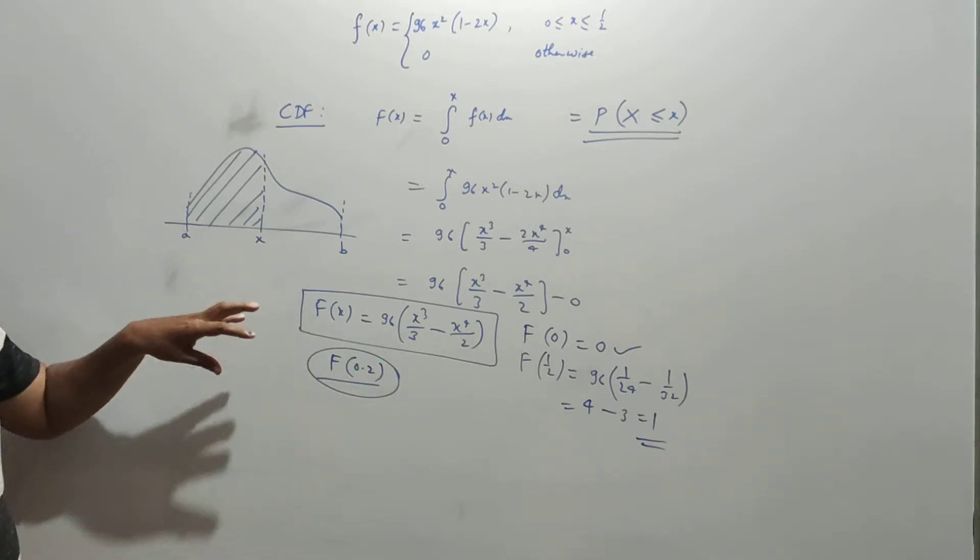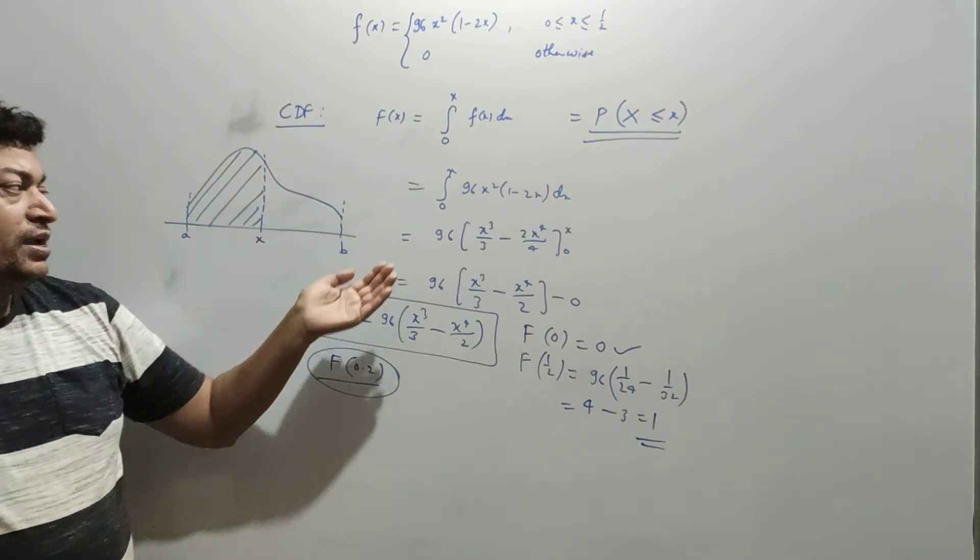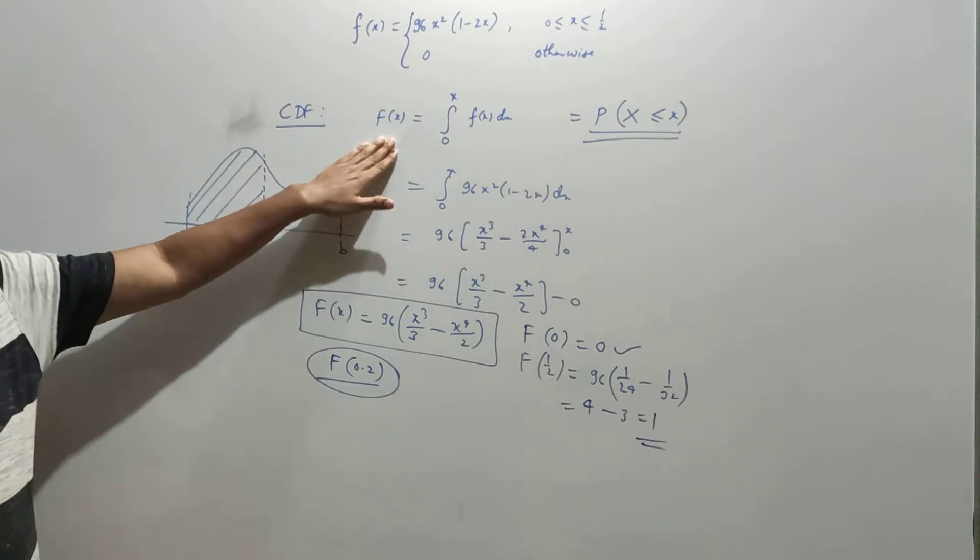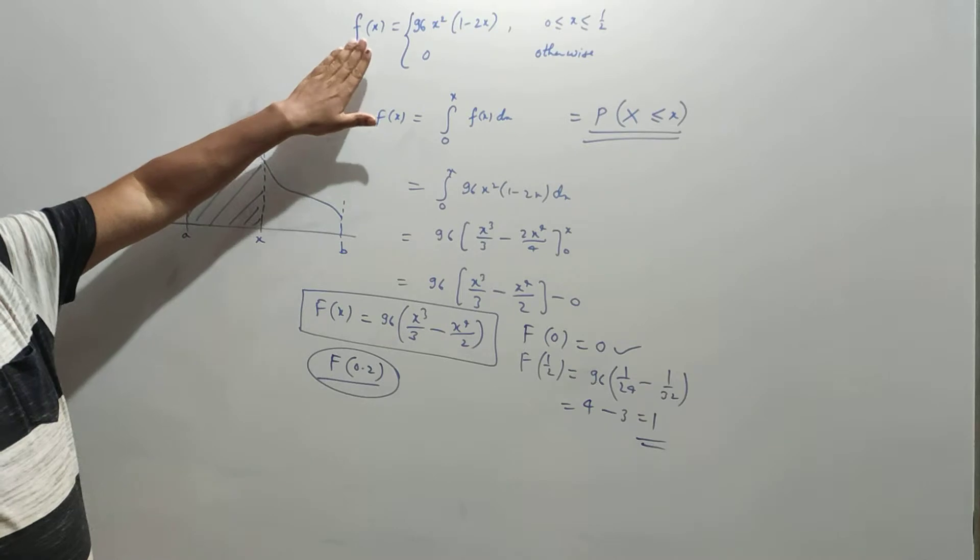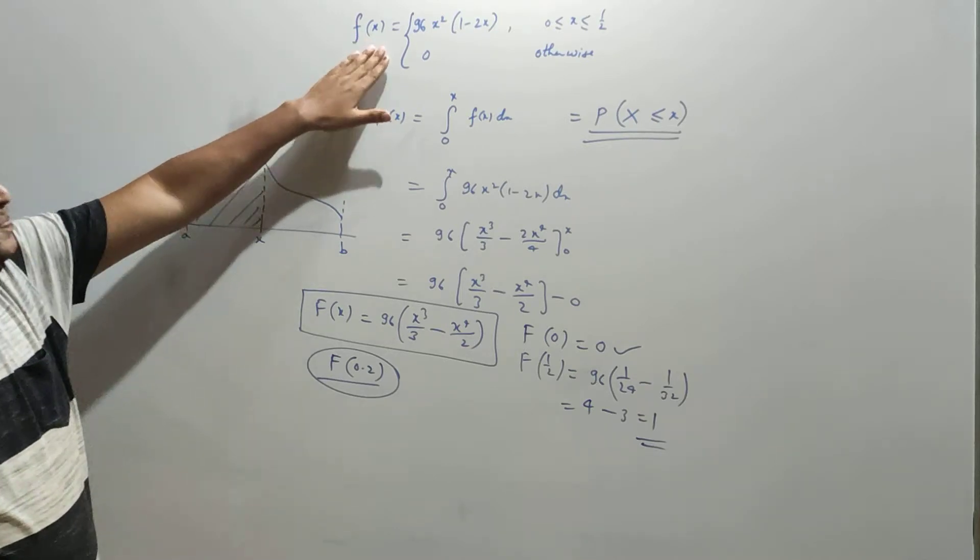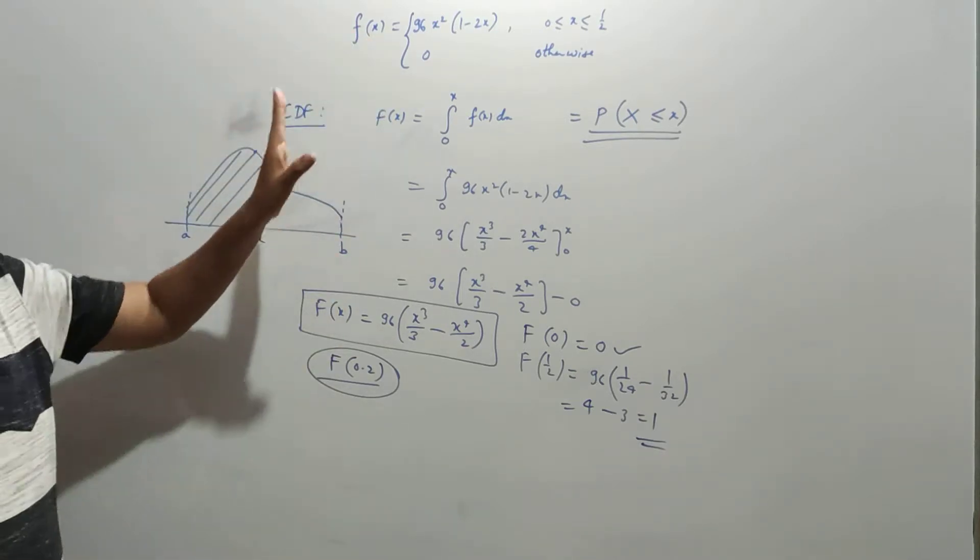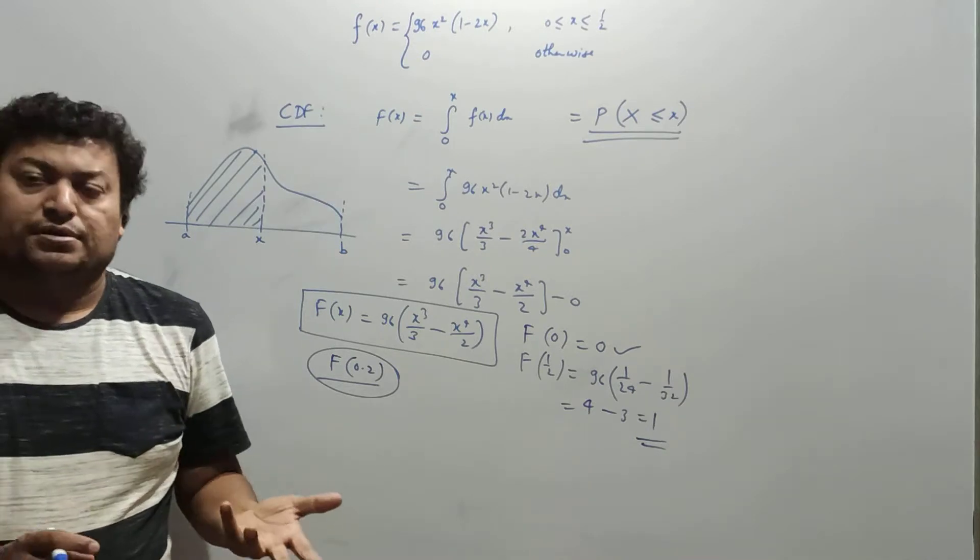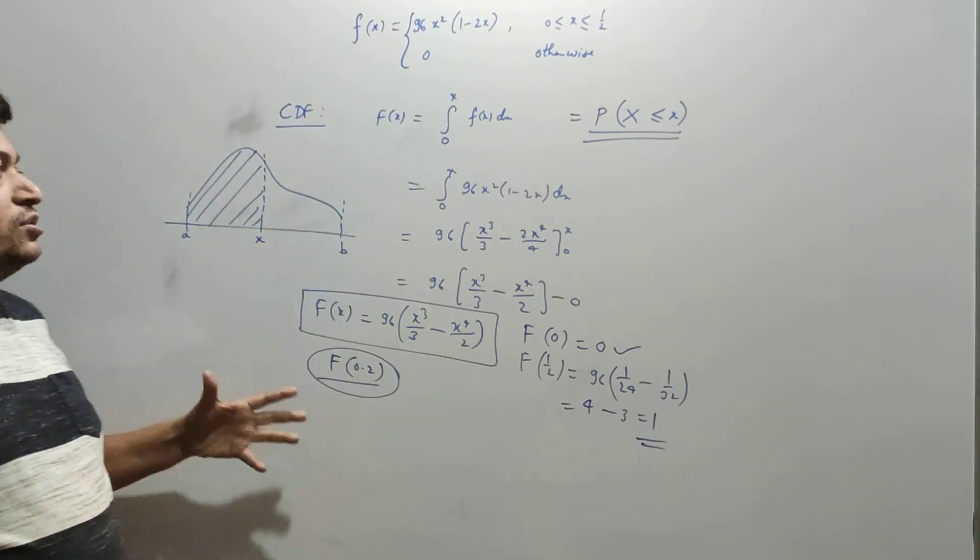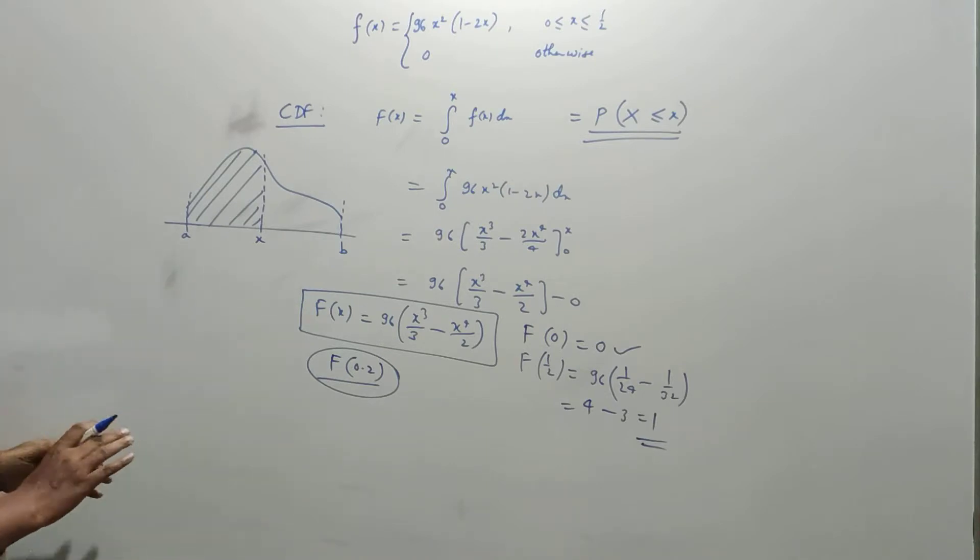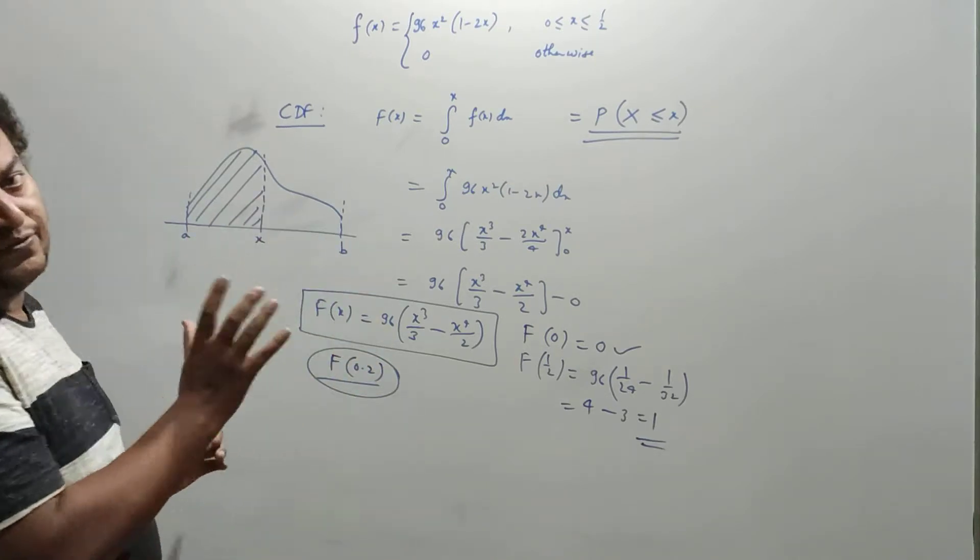So CDF is a very important function because you can find the probability directly by putting the x value in the CDF. But PDF is not like that—if you substitute an x value in PDF, you don't get any significant number. Area is significant in PDF.